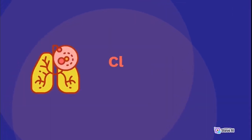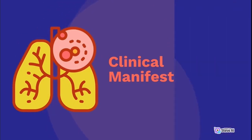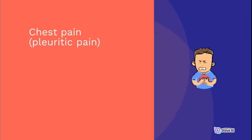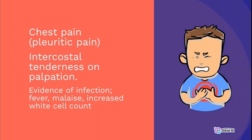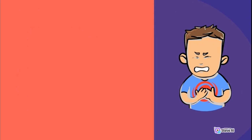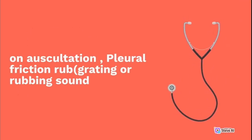Clinical manifestations: chest pain, pleuritic pain, and intercostal tenderness on palpation. Evidence of infection includes fever, malaise, and increased white cell count. On auscultation, a pleural friction rub — a grating or rubbing sound — may be heard.